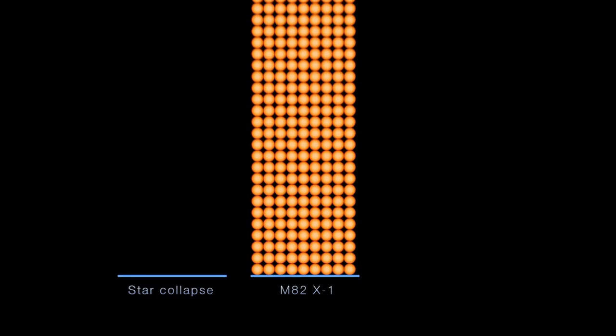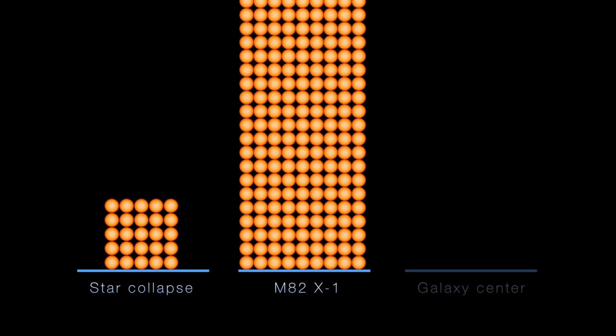Measured masses for black holes formed by stars reach about 25 solar masses, and those found in galaxy centers weigh at least 10,000 times more. Only a handful of black holes have been discovered with inferred masses between these extremes.